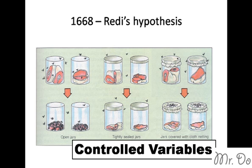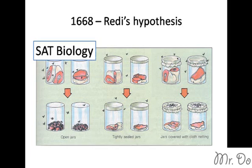Knowing the control variables in a lab experiment is very important. On the SAT biology, they will give you labs and experiments already done by scientists, and then you have to figure out what a control variable is, or what is the result, what's the conclusion. So SAT biology, it's not as hard.